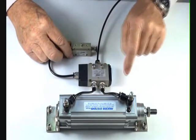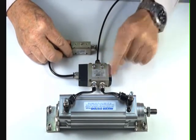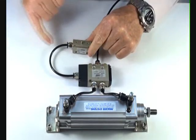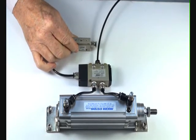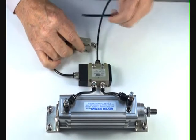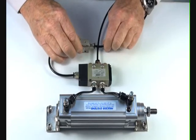This air ram here is controlled by this pilot operated 5-2 valve, and we're going to put a signal to it from this little valve here. This valve will also have an air supply, as such.